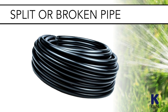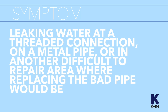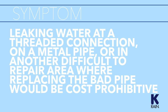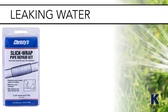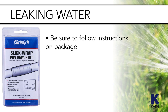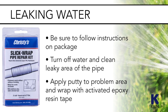Repairs in polyethylene pipe can be somewhat easier because the pipe is more flexible than PVC — the pipe can be repaired by inserting a new piece of pipe with couplers. For leaking water at a threaded connection, on a metal pipe, or in another difficult-to-repair area where replacing the bad pipe would be cost prohibitive, you can use an epoxy-based repair kit like Christie's Slick Wrap to do a wrapped repair. Follow the instructions on the package, turn off the water, clean the leaky area, apply putty to the problem area, and wrap it with an activated epoxy resin tape to create a watertight seal over the leak.